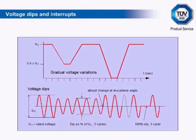The basic parameters are interruptions to 0% voltage from half a cycle to 50 cycles — a dip down to 0 volts lasting from half of one power cycle (one half of 1/50th of a second) right up to one second (50 cycles). And dips from 40% to 70% of the nominal voltage, from half a cycle to 50 cycles — so dipping down to 40% or 70% of the normal power supply.